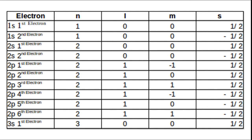For the 2p first electron: n=2, l=1, m=−1, s=+½. For the 2p second electron: n=2, l=1, m=0, s=−½. Similarly, the quantum number sets for different electrons continue in this pattern up through 3s, as given in the table.